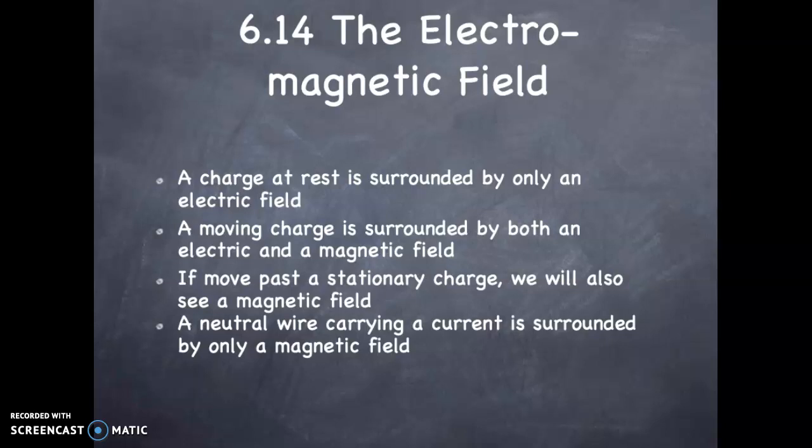A charge at rest is surrounded by only an electric field. A moving charge, however, is surrounded by both an electric and a magnetic field. If moving past a stationary charge, we will also see a magnetic field. A neutral wire current is surrounded only by a magnetic field.